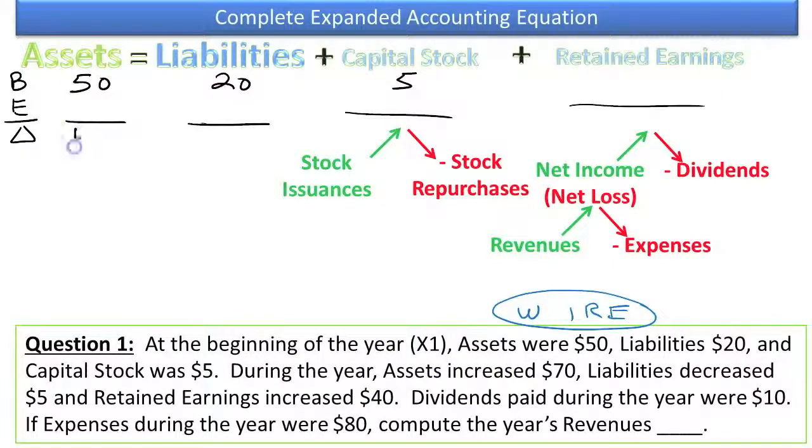During the year, assets increased by $70, Liabilities decreased by $5, and retained earnings increased $40. Dividends paid during the year were $10. If expenses during the year were $80, compute the year's revenues.